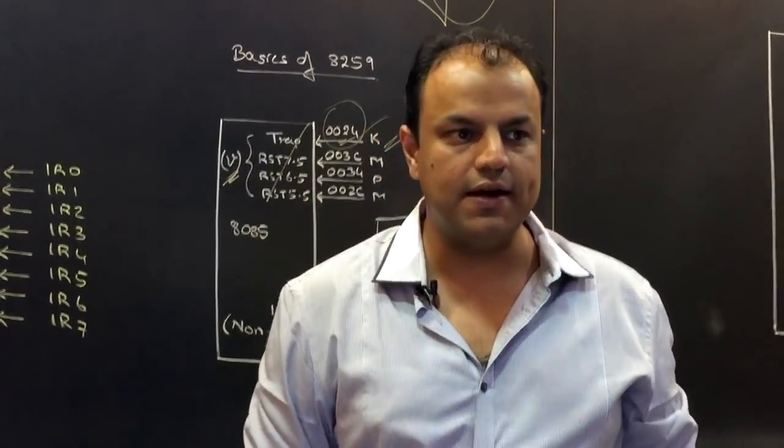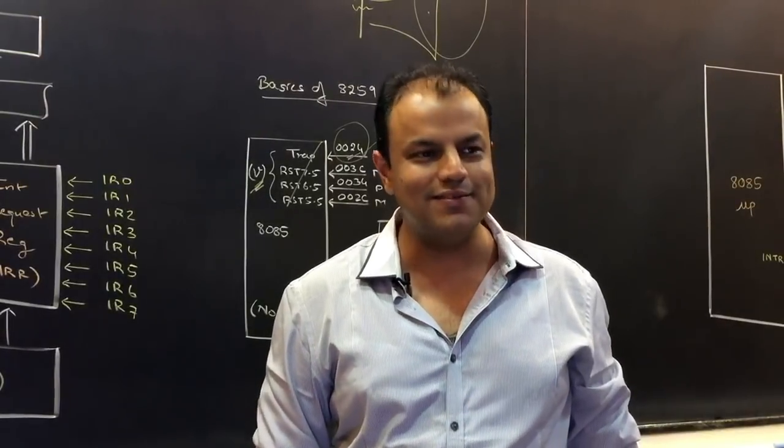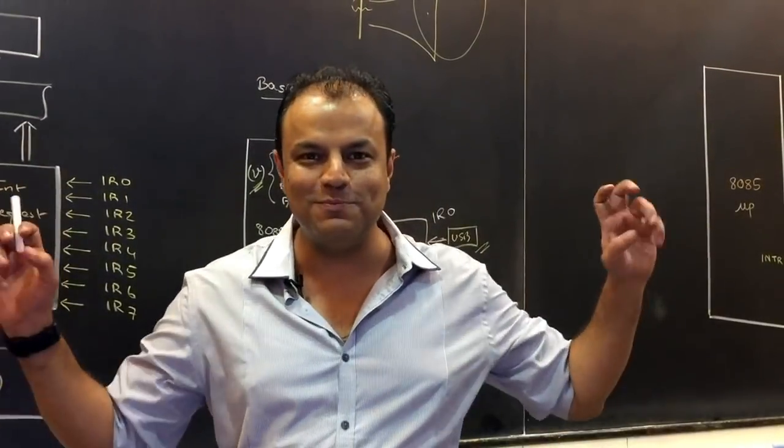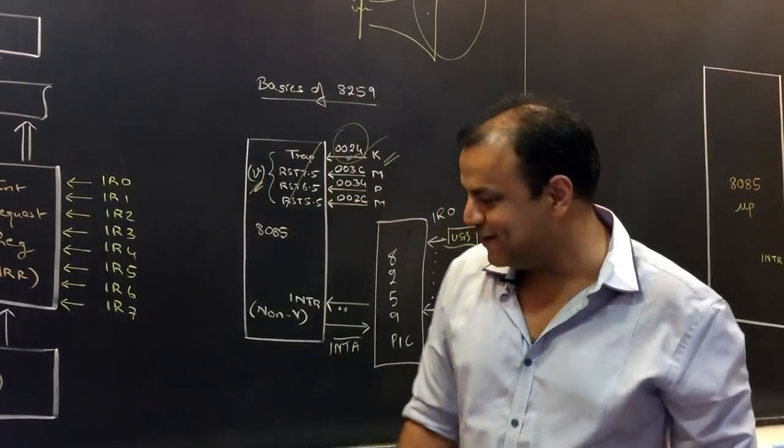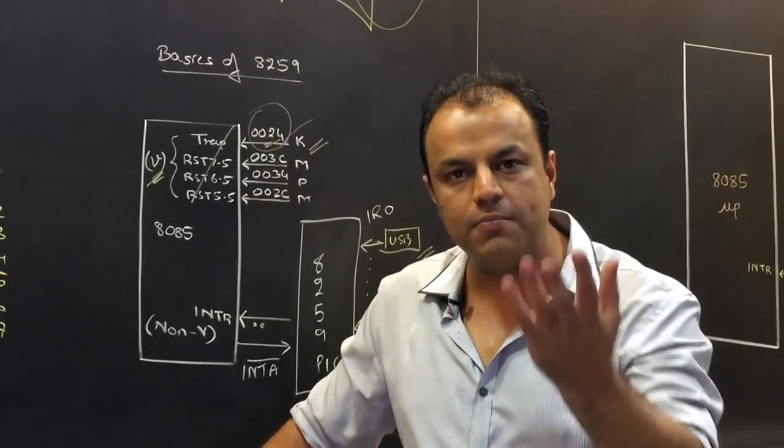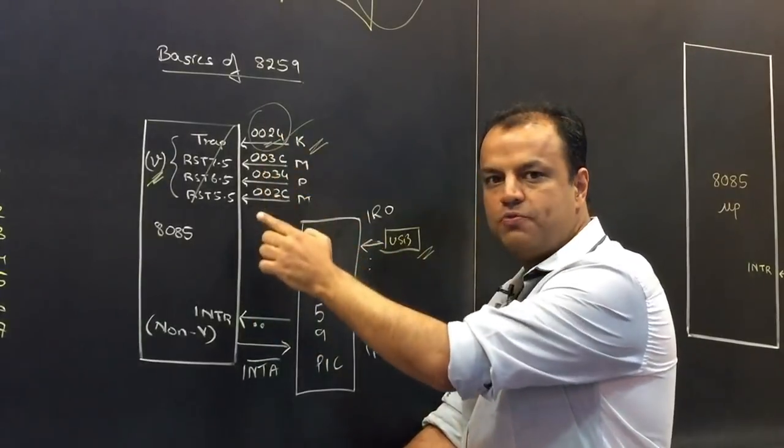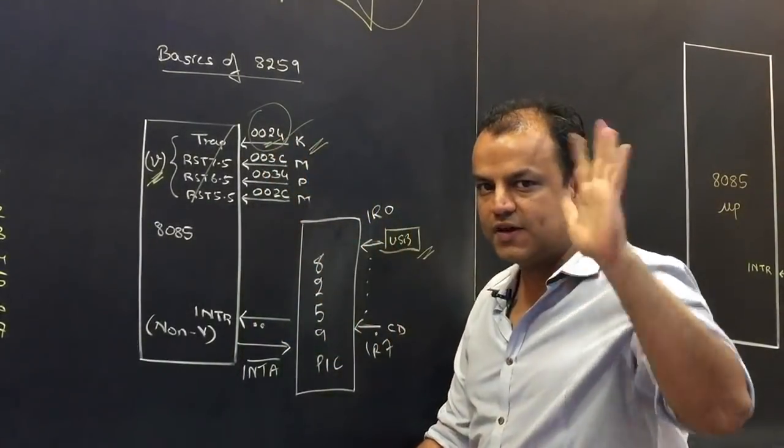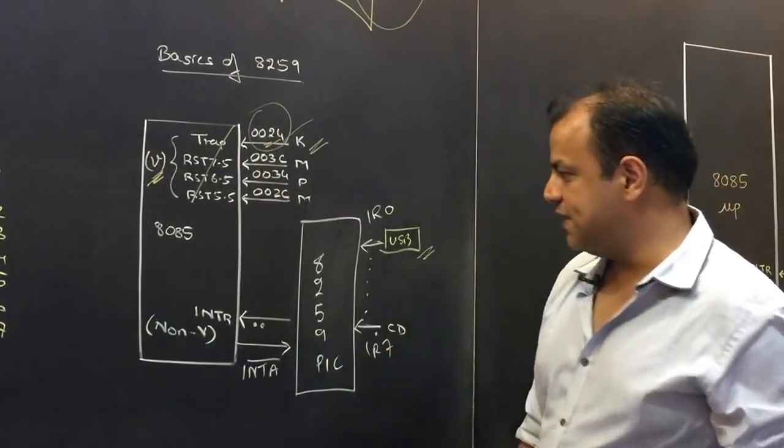When I ask this question to students, why does microprocessor give INTA bar? Students say to acknowledge the interrupt. Like, really? You think that is an answer? You've just given me the name of the interrupt. You know how those typical answers are, right? That is not the answer. You don't give INTA bar to acknowledge the interrupt. You give INTA bar to ask for the ISR address. INTA bar is never issued when microprocessor gets these interrupts because microprocessor already knows the ISR address. Are we clear on this? So, microprocessor gives INTA bar to obtain the ISR address.